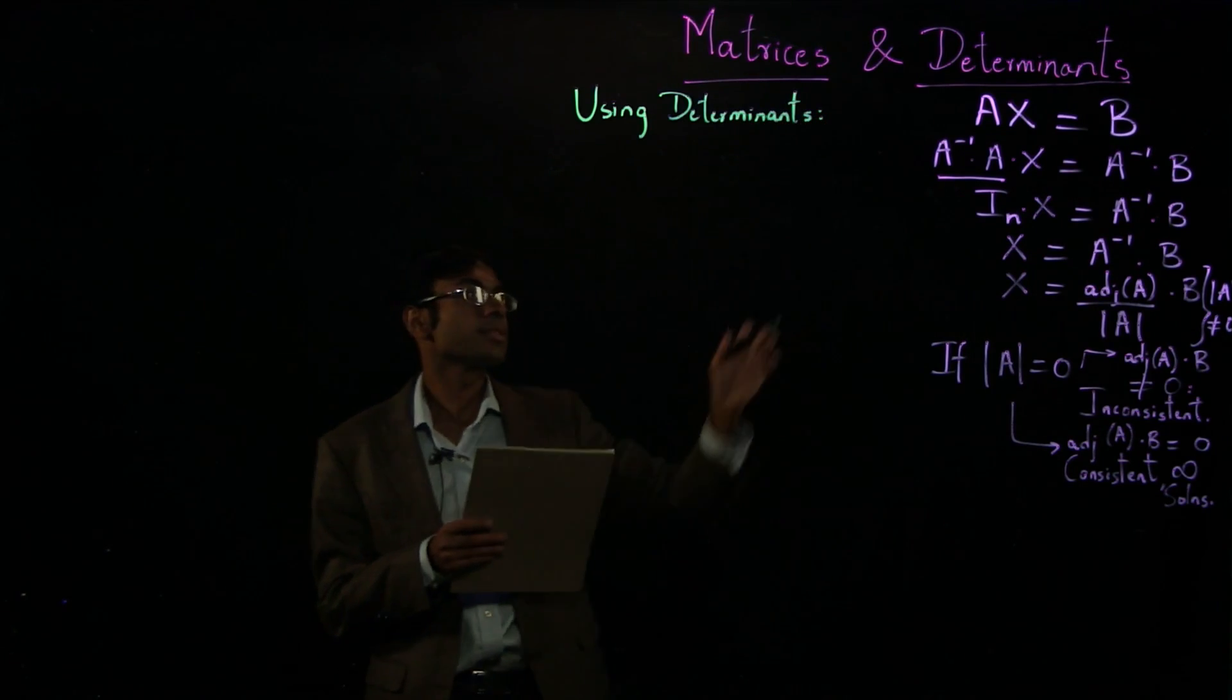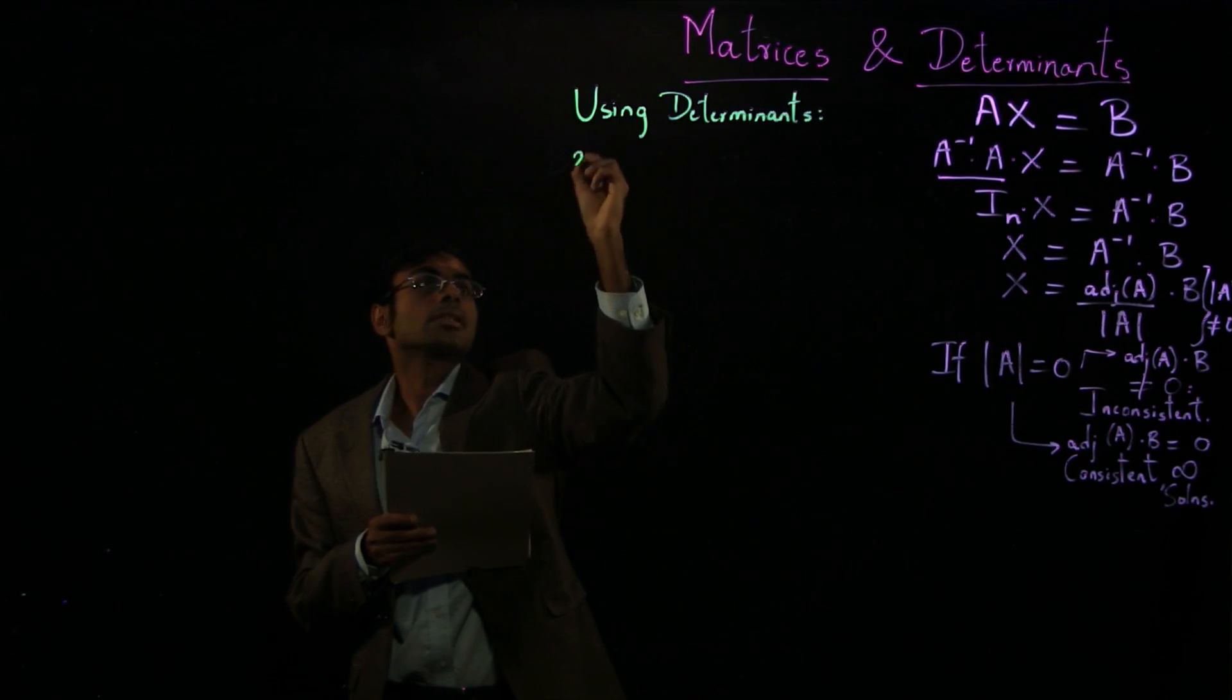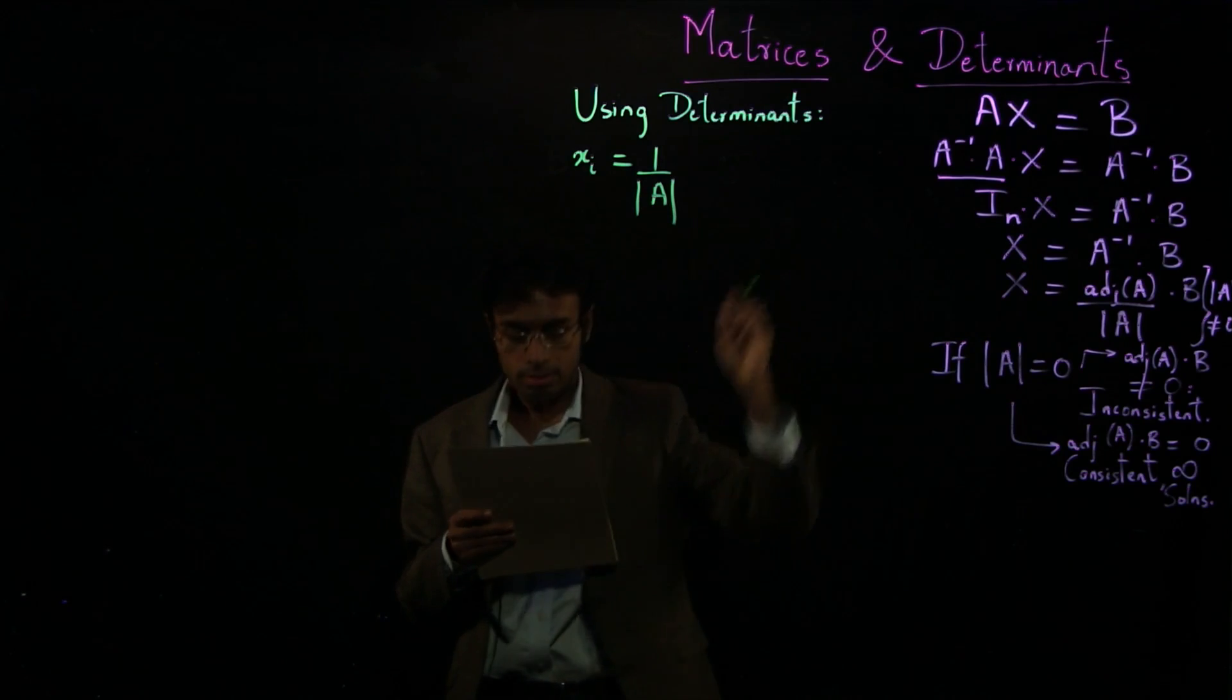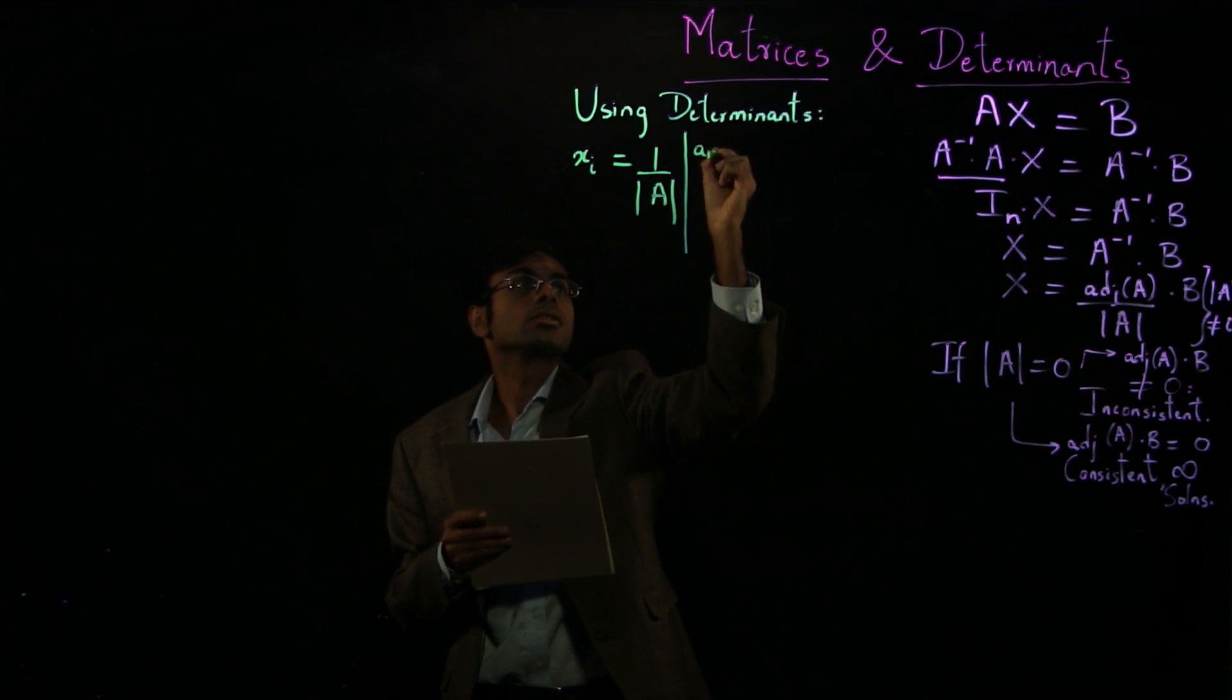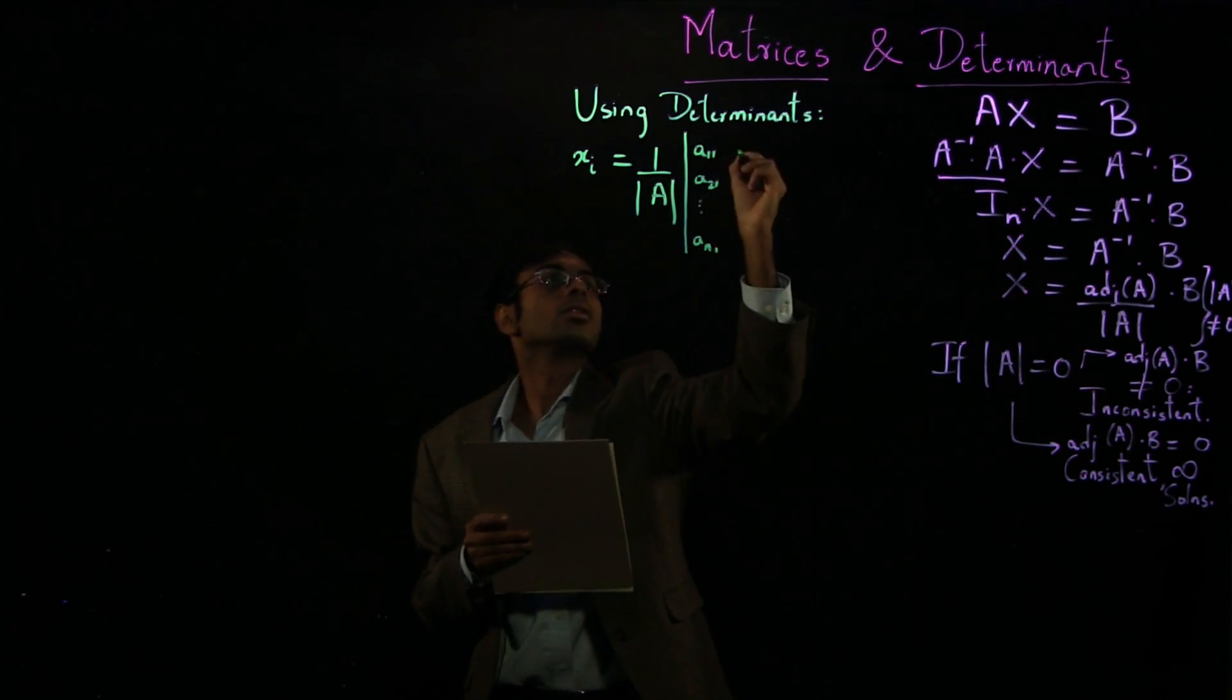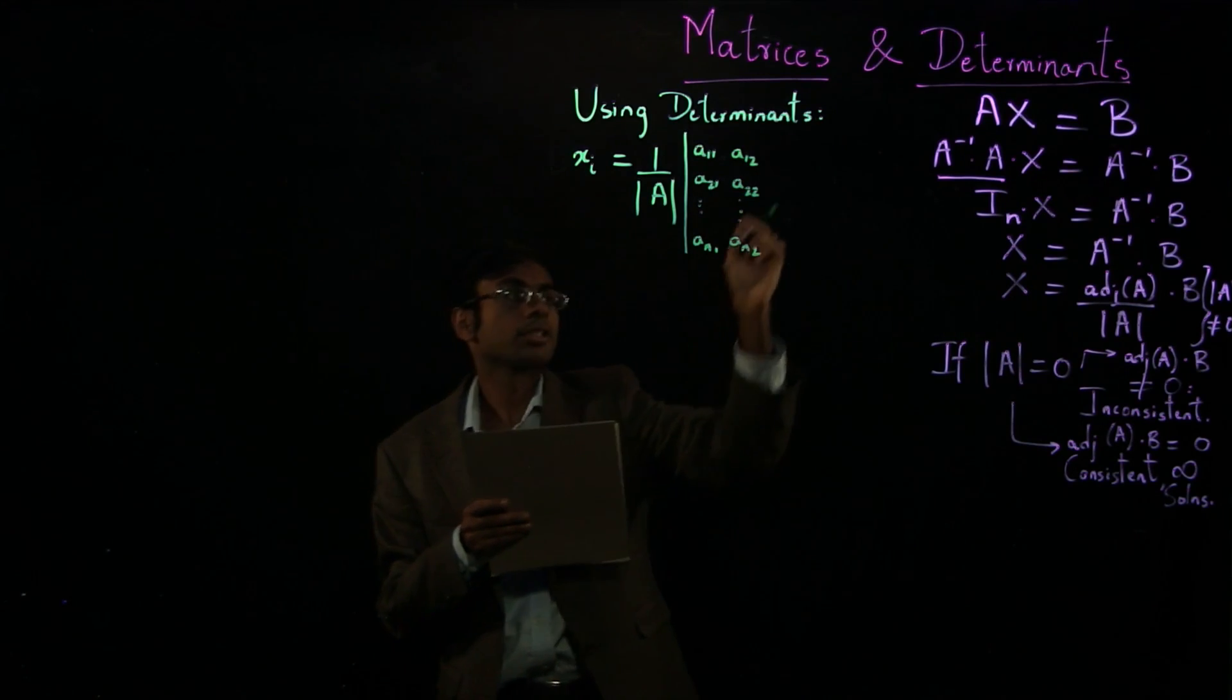For the same system of equations, Ax equals b, the solution for each unknown variable is given as xi equals 1 over determinant of A times this determinant. So a11, a21, aN1, a12, a22, aN2. And then observe this carefully.